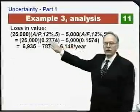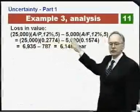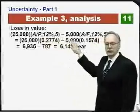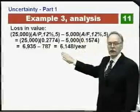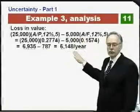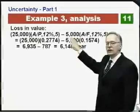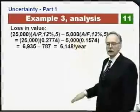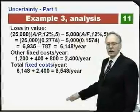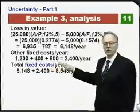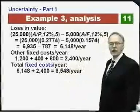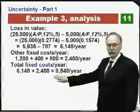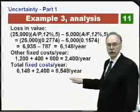The approach is to separate costs into fixed costs that do not depend upon miles driven and variable costs that do. The loss in value — from $25,000 to $5,000 over five years — is annualized using the capital recovery factor and sinking fund factor at 12%, giving $6,148 per year. Other fixed costs are insurance ($1,200), taxes ($400), and repairs ($800), totaling $2,400 per year. So total fixed costs are approximately $8,548 per year.